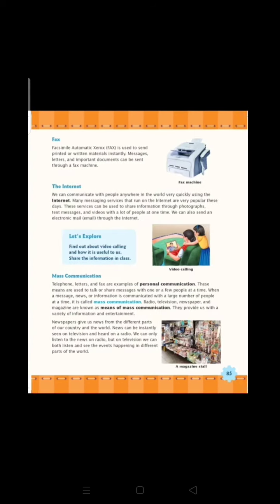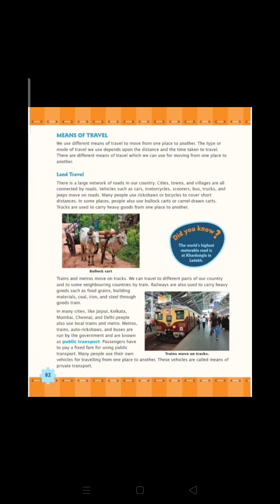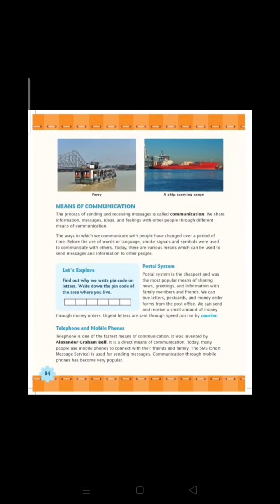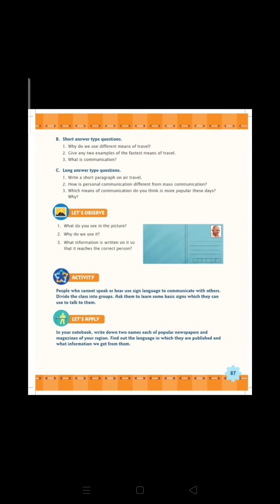This is all about our chapter. We discussed travel and communication. In means of travel there is land travel, air travel, and water travel. In means of communication there is postal system, telephone and mobile phone, fax, internet, and mass communication. After watching this video, you have to read the chapter thoroughly from your book and complete the exercise given at the end of the chapter. Try to solve this exercise by yourself without taking help from any other person.